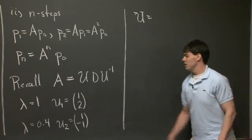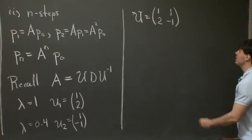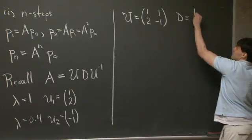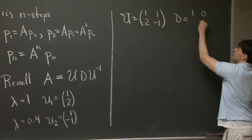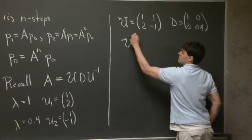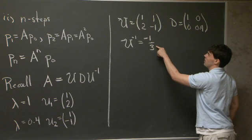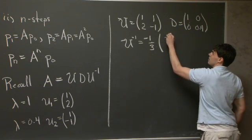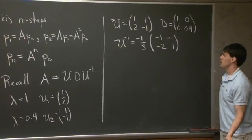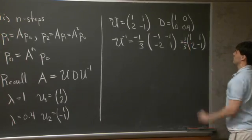OK, we can now write this big matrix U as 1, 2, 1 minus 1. D is going to be, now I have to match things up. If I'm going to put the first eigenvector in the first column, we have to stick 1 in the first column as well, and then 0.4, like this. And then lastly, we also have U inverse, which I can just work out to be minus 1 third, 1 over the determinant, times minus 1, minus 1, minus 2, and 1, which simplifies to this.